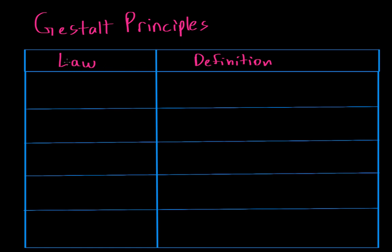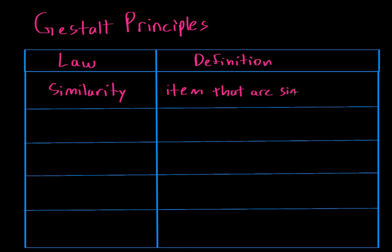The first Gestalt Principle is the law of similarity. The law of similarity basically says that items that are similar to one another are grouped together by your brain. So what does this mean? Let's look at an example.